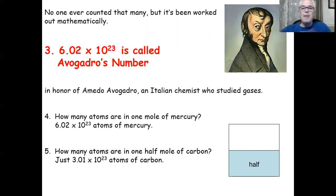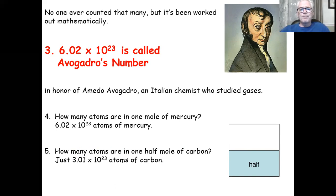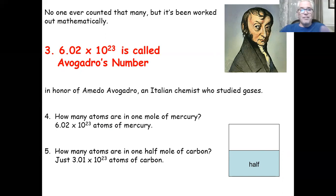Avogadro was an Italian chemist who studied gases, and they named this number after him. For example: how many atoms are in a mole of mercury? If you had one mole of mercury, you'd have 6.02 × 10²³ atoms. A half a mole of carbon would be 3.01 × 10²³ atoms. You could have any number of moles.